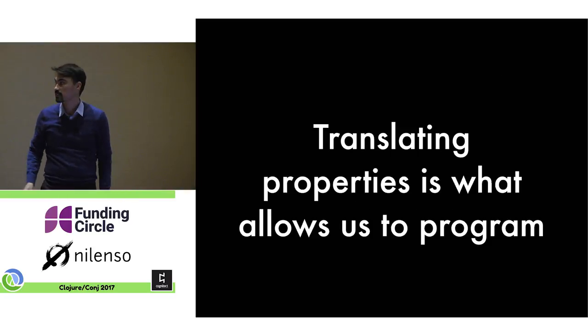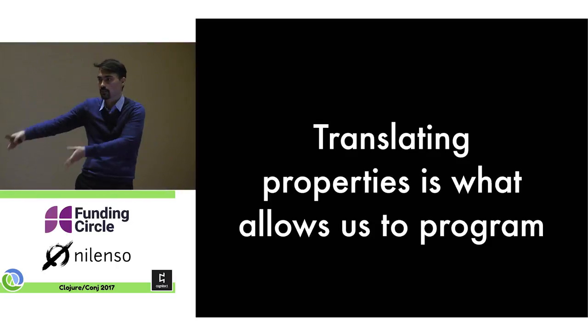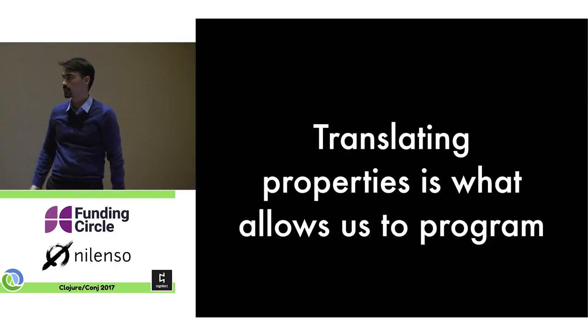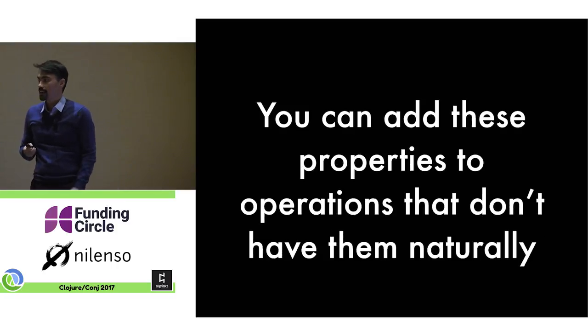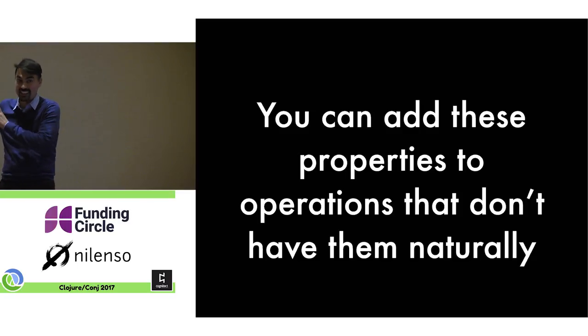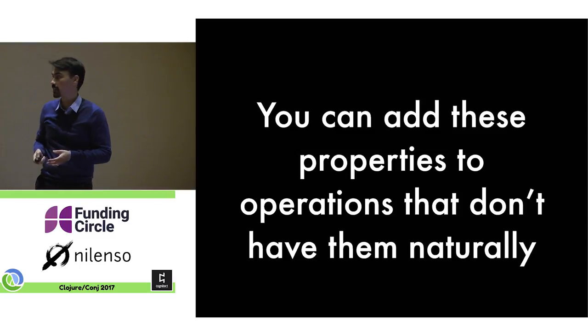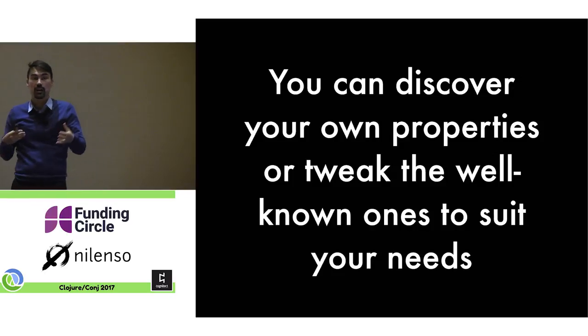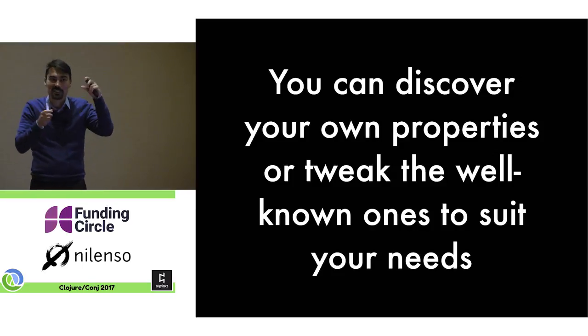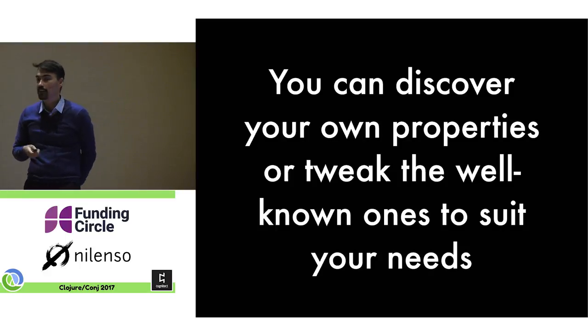Here's the conclusions. Translating these properties is what allows us to program. To translate from a physical to a software or symbolic system. And not only do we want to preserve these things. And they're not these specifically. These were just examples. I talked about that. You can derive your own. You can add these to get those properties. Just like we did with the average example. And you can discover your own properties. The trick is to make sure that they're simple and easy to test like we had. And you can tweak the ones that are well-known that you find in the algebra books. Because in the real world there are these corner cases and stuff that you have to deal with.